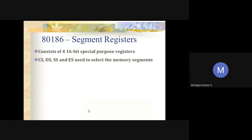For segment registers, there are four 16-bit special-purpose registers: CS, SS, DS, and ES. All these registers are used to select the segments of memory at any given time, and with their help you can access memory or data depending on your purpose.